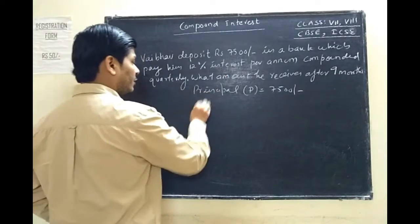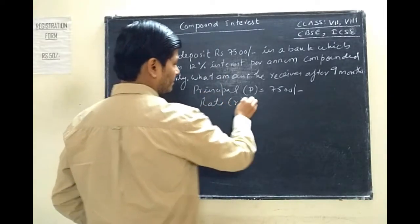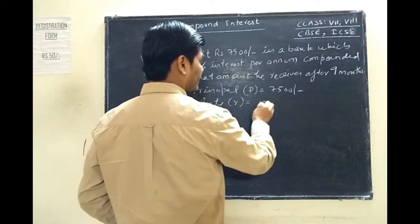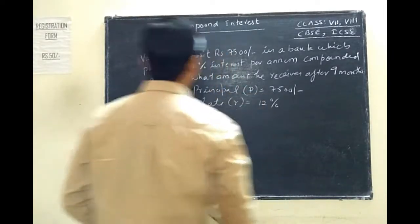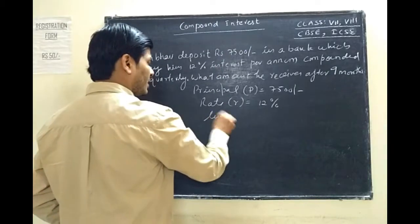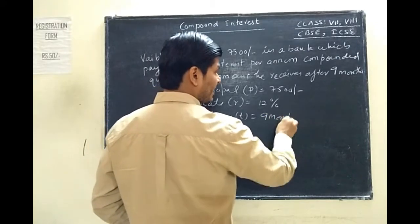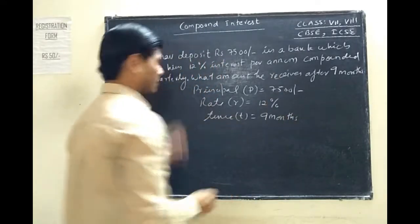The rate of interest we have is 12%, and the time period is 9 months. Now we will convert this according to quarterly calculation.